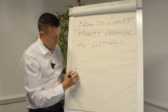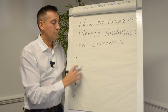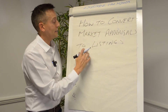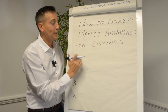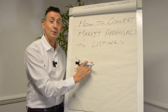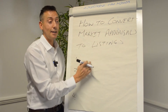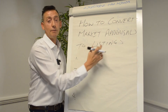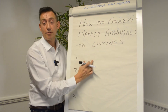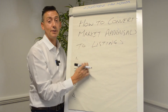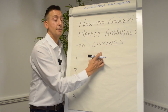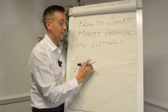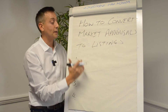Put four points down. Brainstorm this, come up with some ideas. What things can you do differently to ensure you improve your conversion from whatever it is? It might be 30% to 40%, or from 20% to 40% or to 50%, whatever it is.